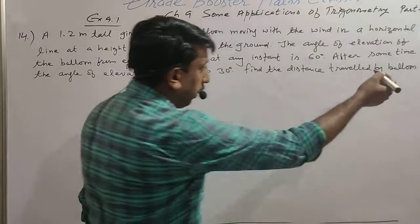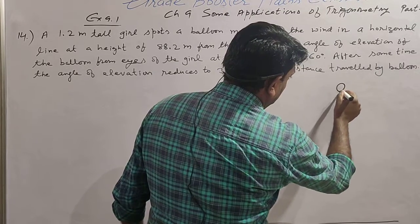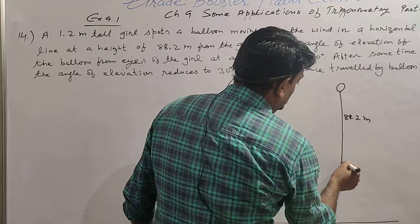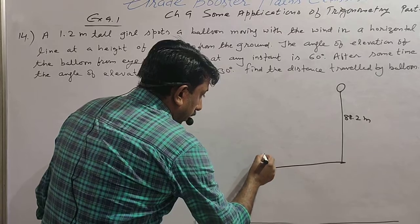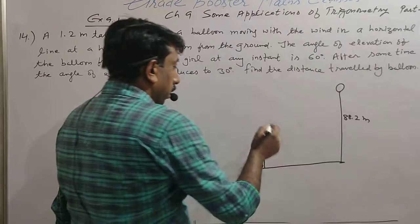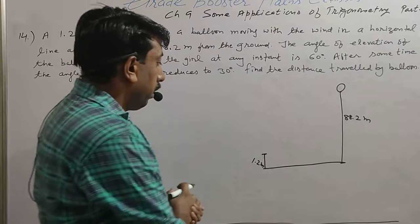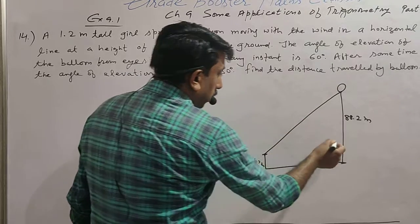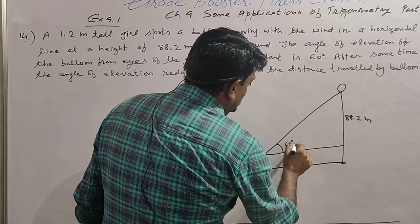The balloon is flying at a height of 88.2 m from the ground level. A girl is standing on the ground and the height of the girl is 1.2 m. When she observes the balloon at any moment, the angle of elevation from her eyes is 60 degrees — this is the line of sight.